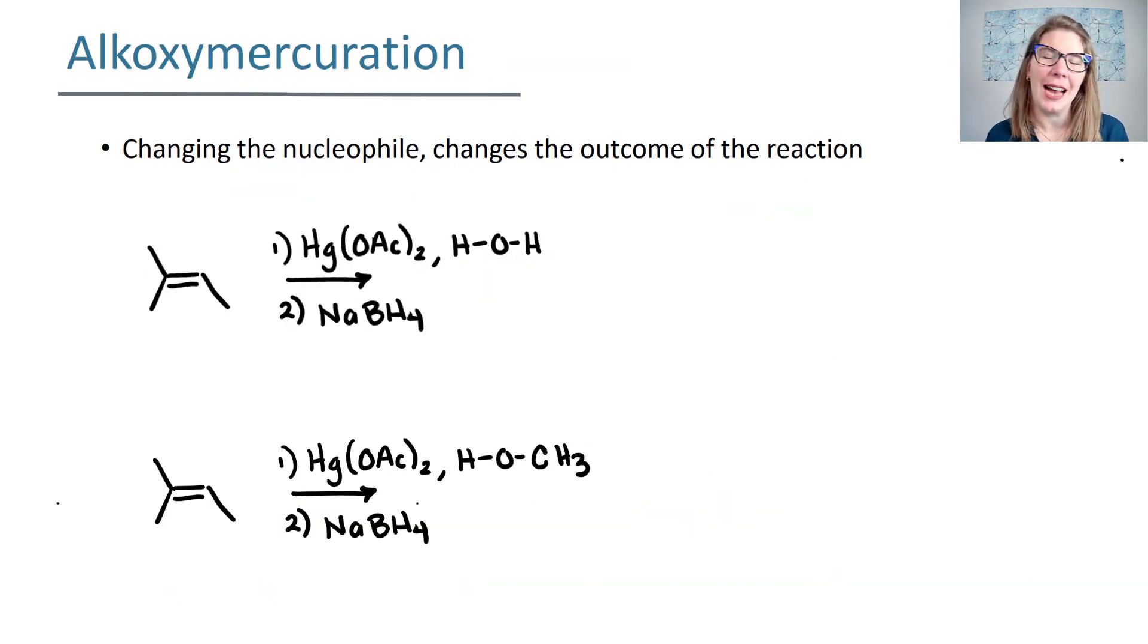Now let's look at alkoxymercuration. When we looked at these prior reactions and we said we had our nucleophile, your nucleophile is going to be the O and the H, right? That's the part that adds to the alkene so that overall you're getting the nucleophile to add to the more substituted side.